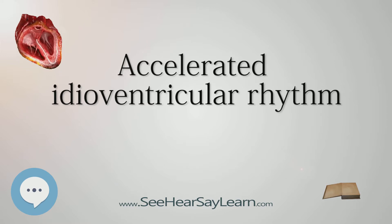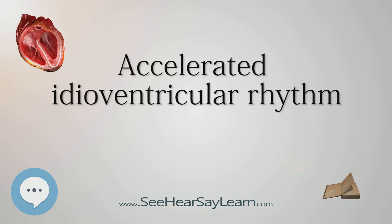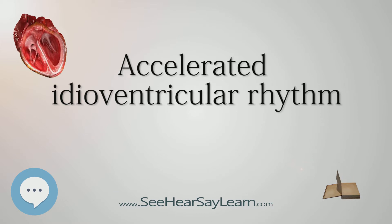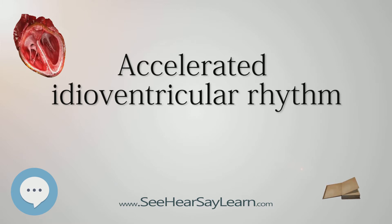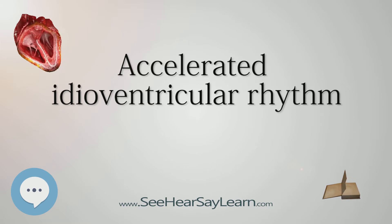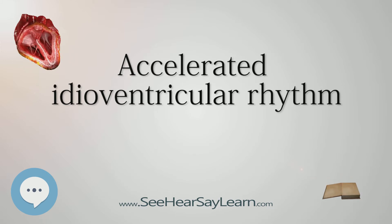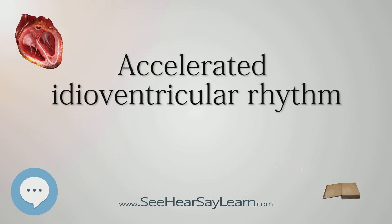In the human heart, the sinoatrial node is located at the top of the right atrium. The sinoatrial node is the first area of the heart to depolarize and generates the action potential that leads to depolarization of the rest of the myocardium. Sinoatrial depolarization and subsequent propagation of the electrical impulse suppress the action of the lower natural pacemakers of the heart, which have slower intrinsic rates. The accelerated idioventricular rhythm occurs when the depolarization rate of a normally suppressed focus increases above that of the higher order focuses — the sinoatrial node and the atrioventricular node.